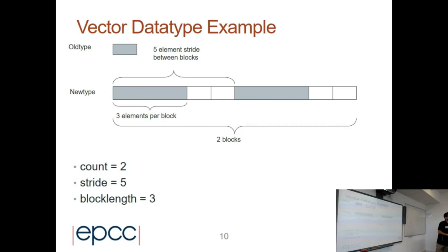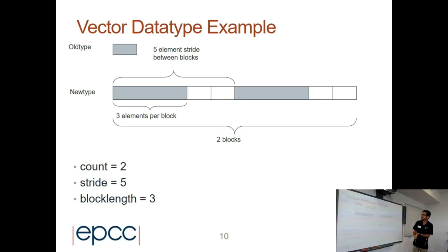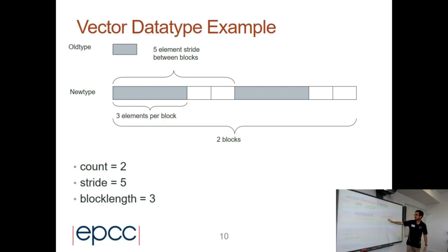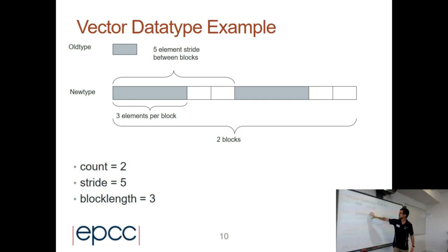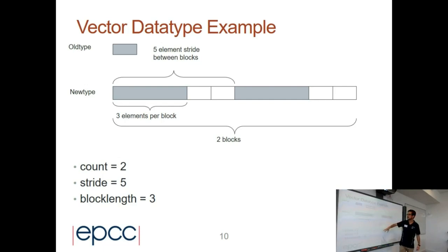Here we have the MPI_Type_vector, which is a bit more difficult to define. We have three parameters. The first is count — how many portions of the array I want to send. For example, if we have portion one and portion two, the count is two.